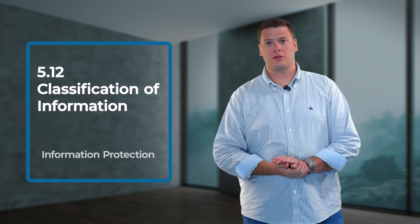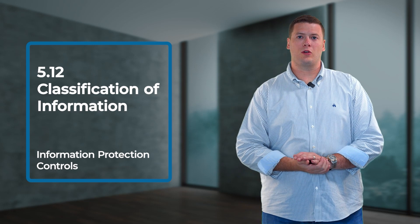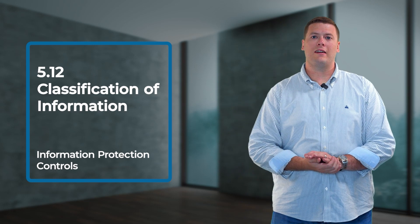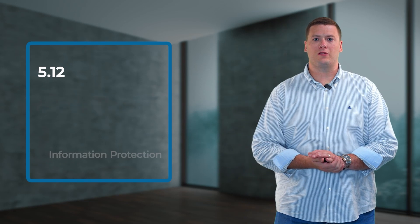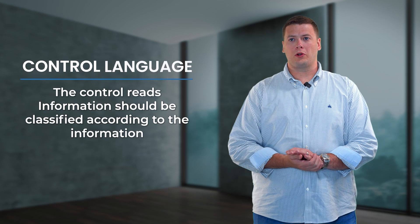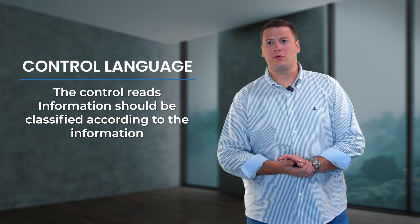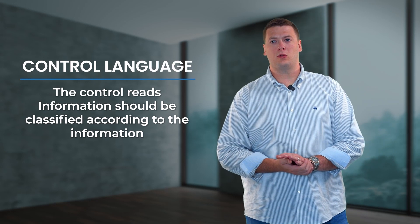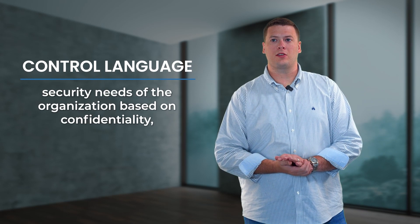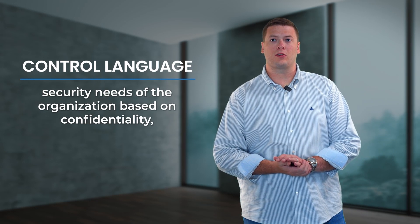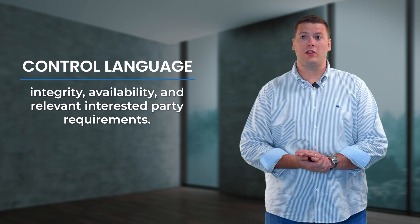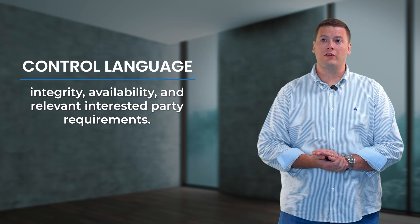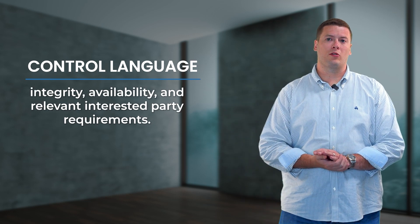In this video, we'll cover information protection controls. The first control we'll talk about is 5.12, Classification of Information. The control reads: information should be classified according to the information security needs of the organization based on confidentiality, integrity, availability, and relevant interested party requirements.